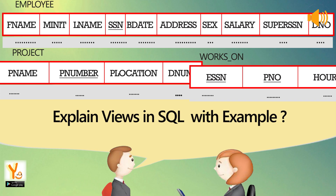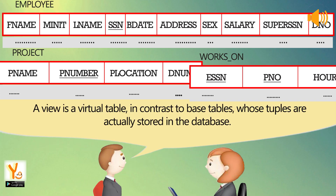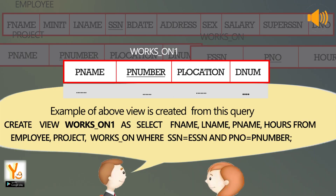Explain views in SQL with an example. A view is a virtual table, in contrast to base tables, whose tuples are actually stored in the database. Example: CREATE VIEW works_on1 AS SELECT Fname, Lname, Pname, hours FROM employee, project, works_on WHERE SSN = ESSN AND PNO = Pnumber.